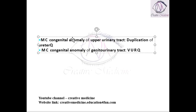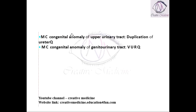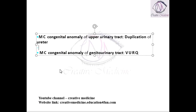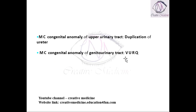If asked what is the most common congenital anomaly of the upper urinary tract, the answer is duplication of the ureter. If asked what is the most common congenital anomaly of the genitourinary tract, the answer is vesicoureteric reflux.